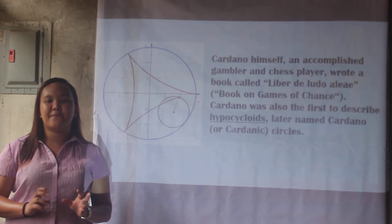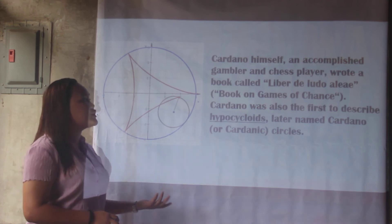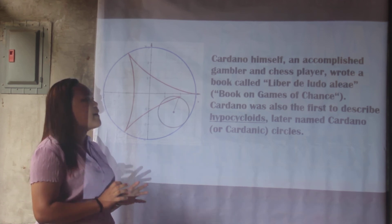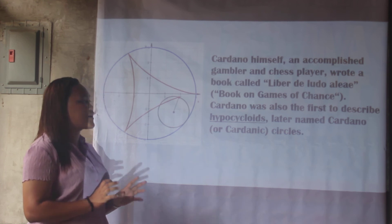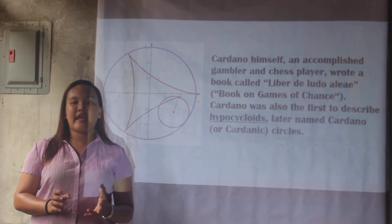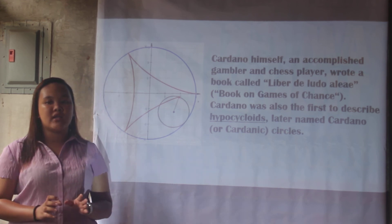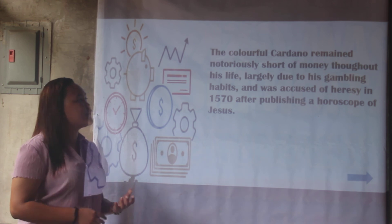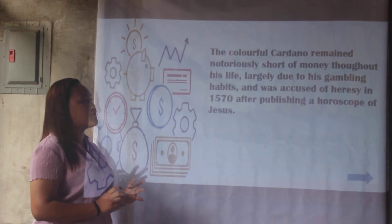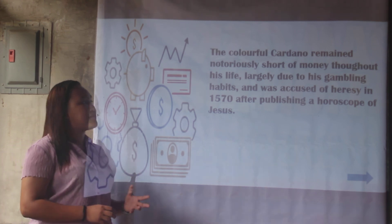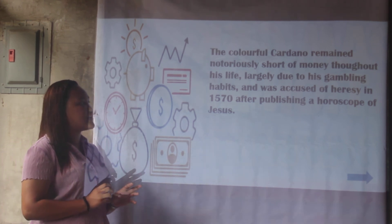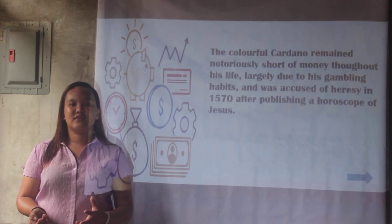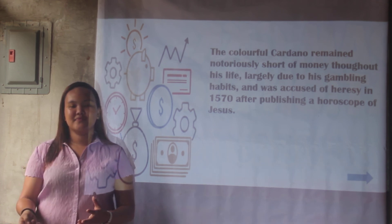Cardano himself, an accomplished gambler and chess player, wrote a book called Liber de Ludo Aleae — Book on Games of Chance. He was also the first to describe hypocycloids, later named Cardanic Circles — the pointed plane curve generated by tracing a fixed point on a smaller circle that rolls within a larger circle. The colorful Cardano remained notoriously short of money due to his gambling habits, and was accused of heresy in 1570 after publishing a horoscope of Jesus.